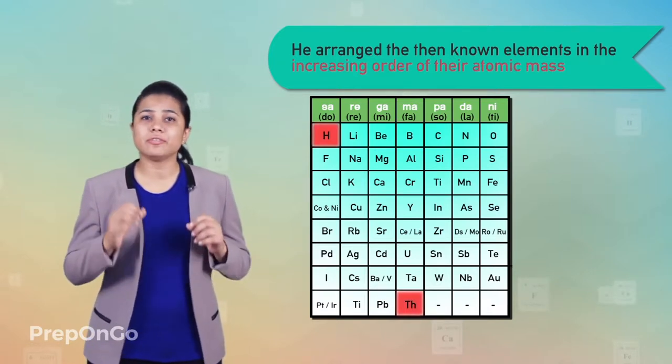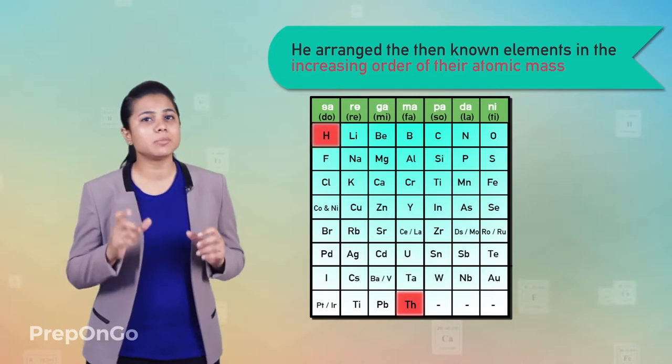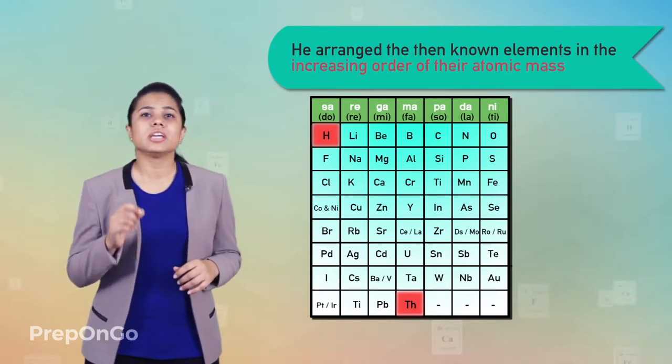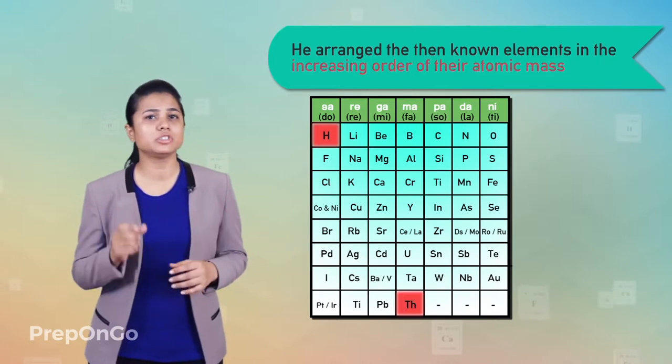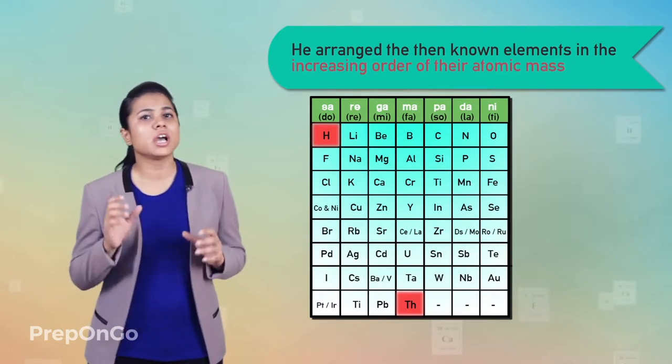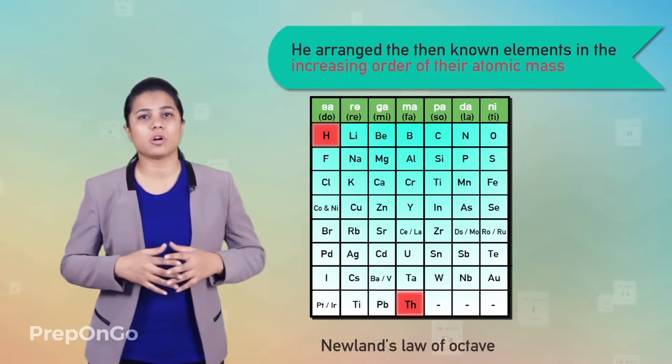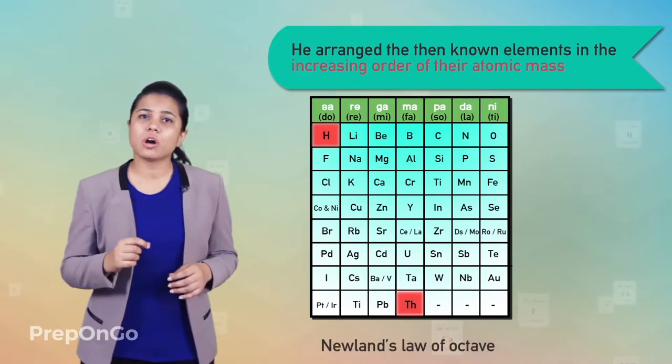He observed that every eighth element has similar properties to that of the first one. This variance, he observed, was quite similar to the musical notes occurring in the octaves. Therefore, he called it the law of octaves.